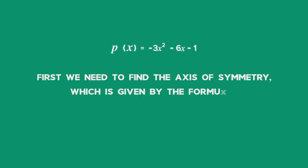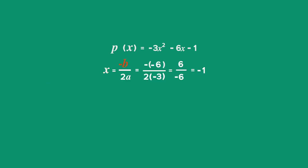First, we need to find the axis of symmetry, which is given by the formula x = -b/(2a).